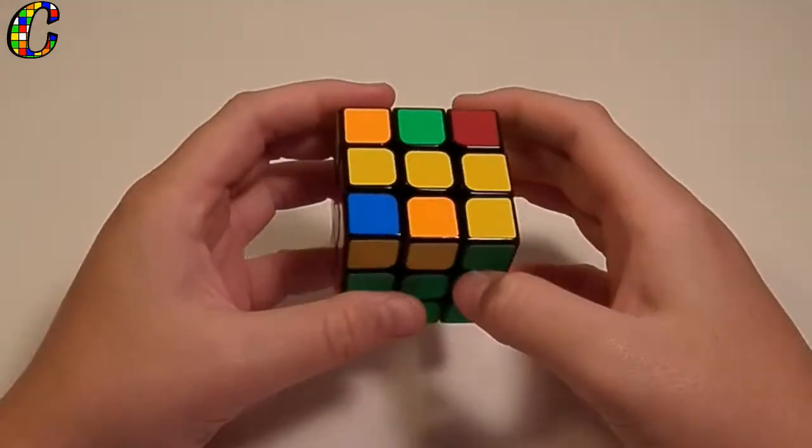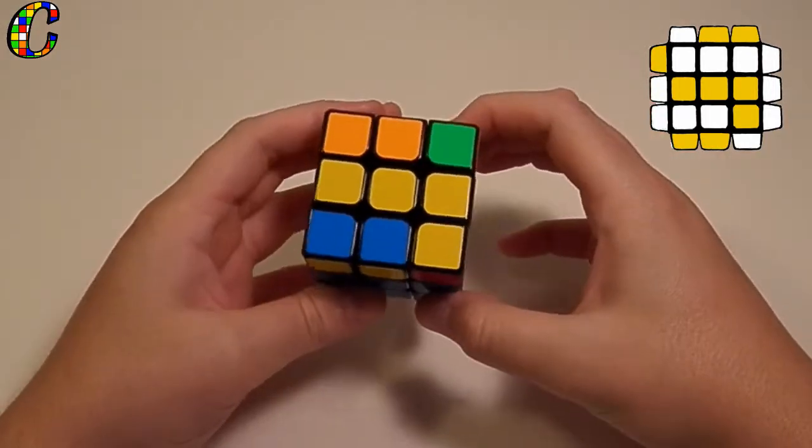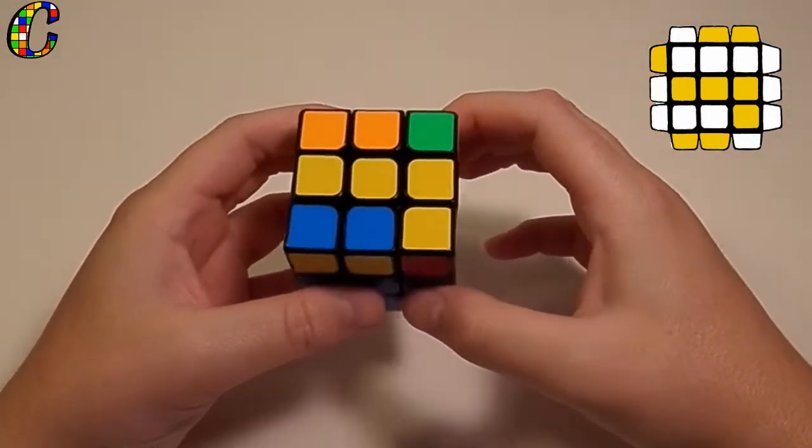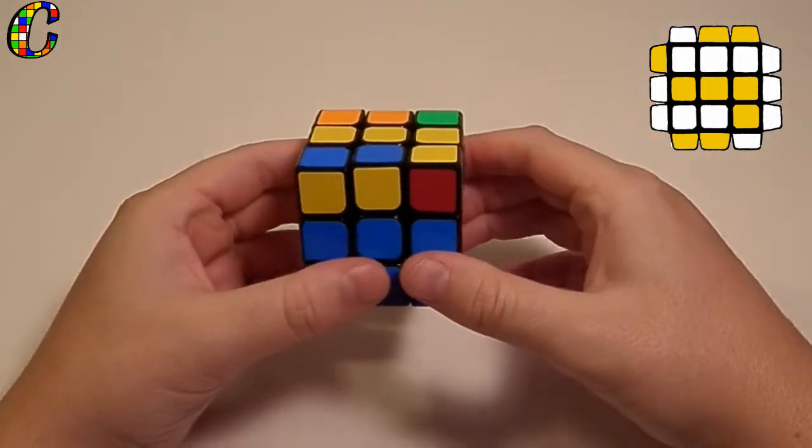The next case we're going to cover today is OLL number 14, another L-shape. Now the way you recognize this case is you have the L oriented like this. You see on the front of the cube